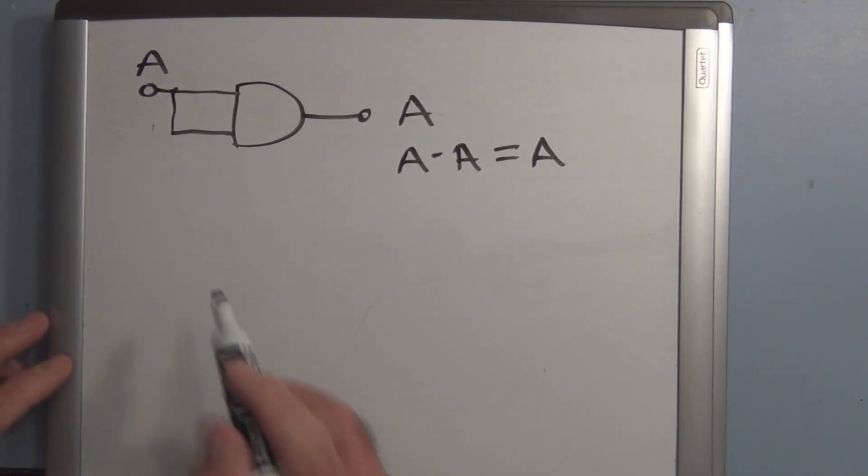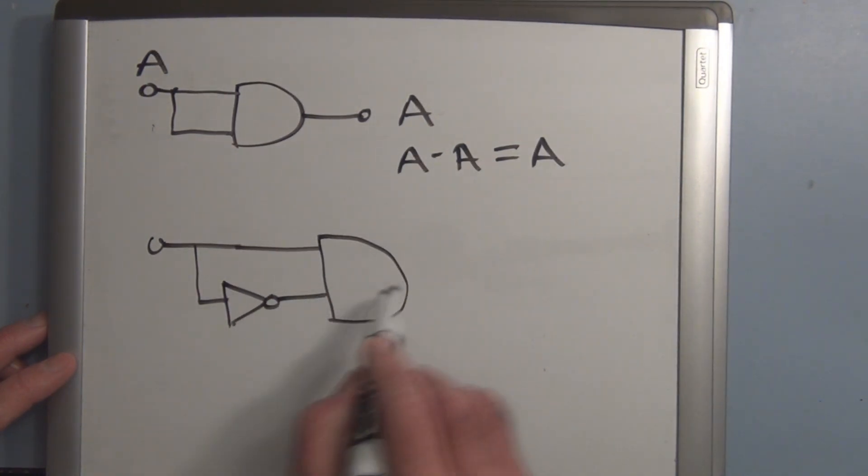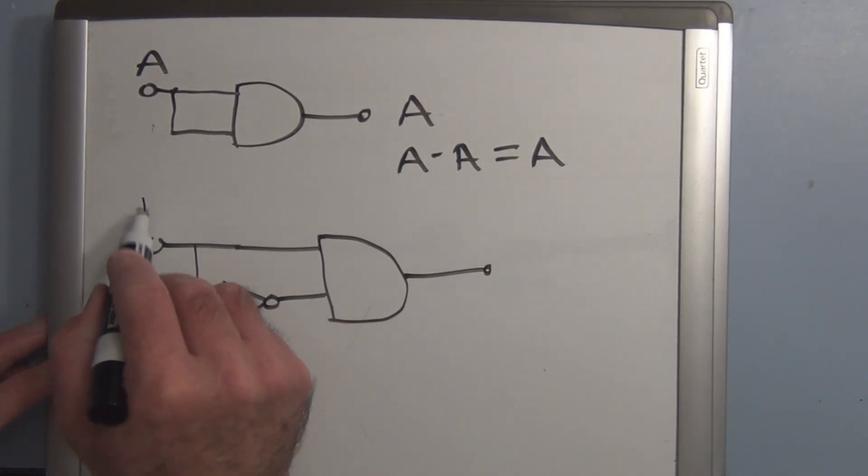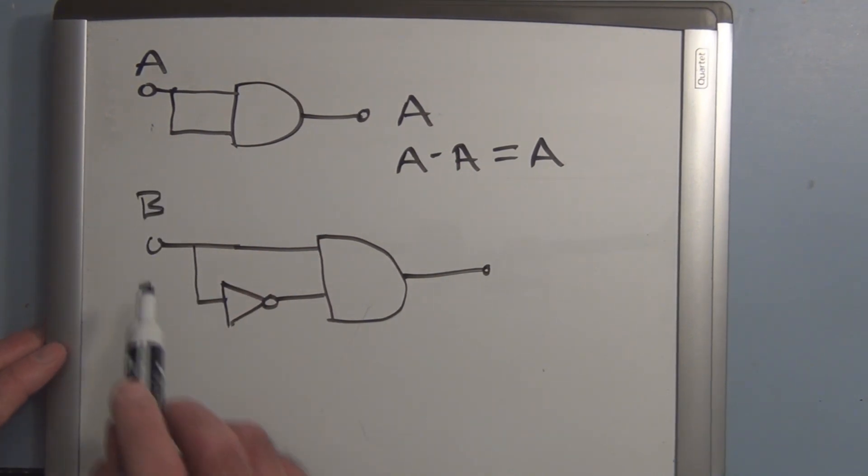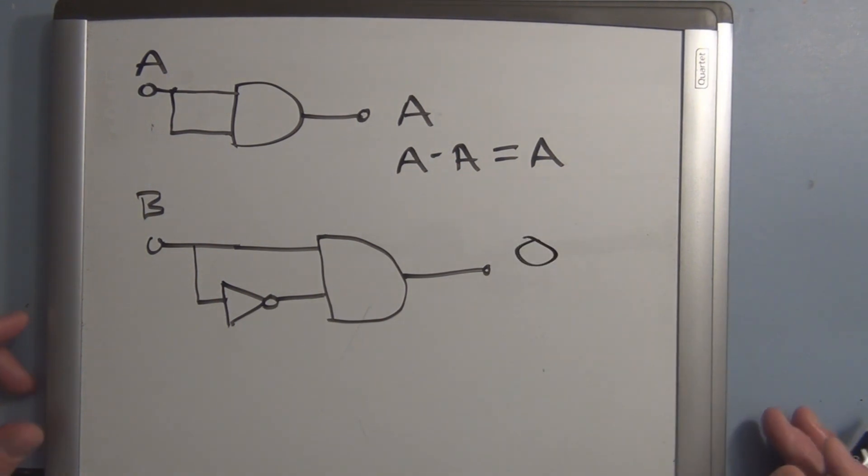Well, we know that if we have B and B not going into an AND gate, this is B. If B is 1, B not is 0. Well, you only get an output of 1 on an AND gate if both inputs are 1. So this guarantees that the output will always be a 0.